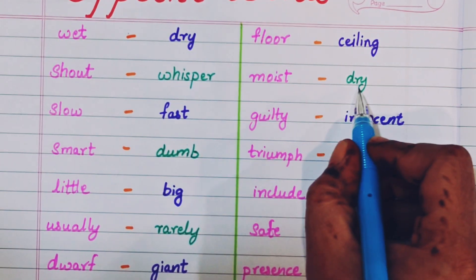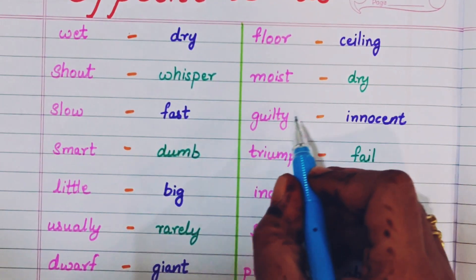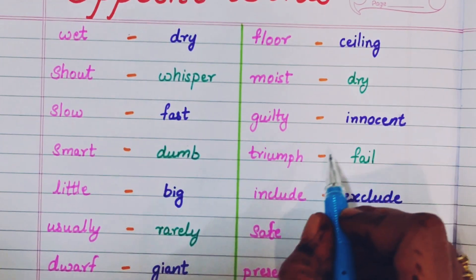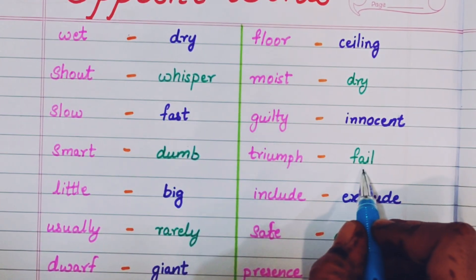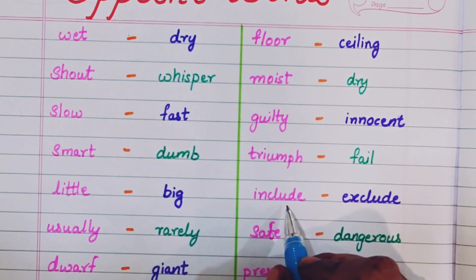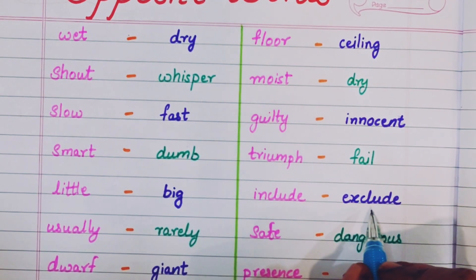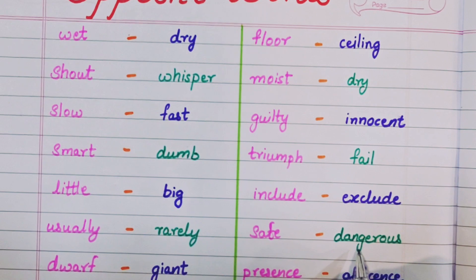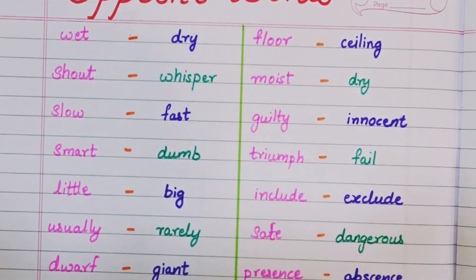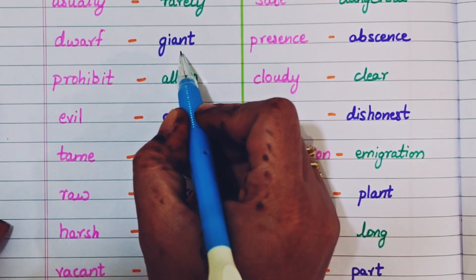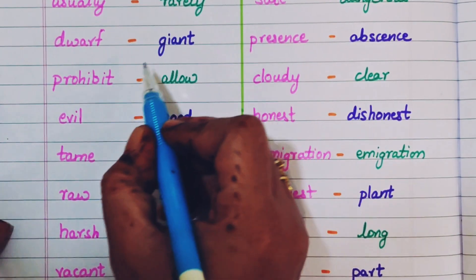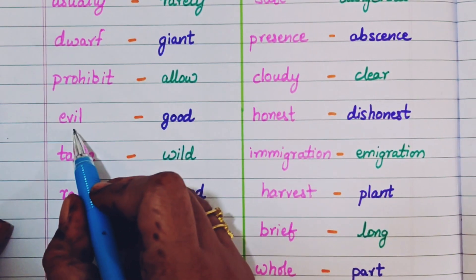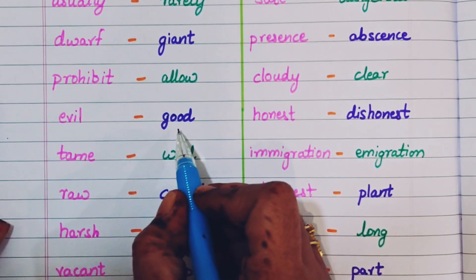Moist, dry. Guilty, innocent. Triumph, fail. Include, exclude. Safe, dangerous. Dwarf, giant. Prohibit, allow. Evil, good.